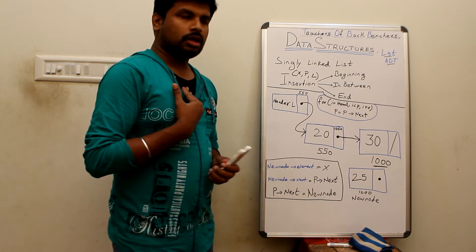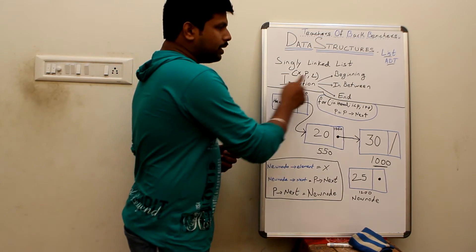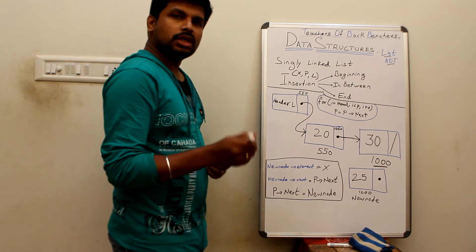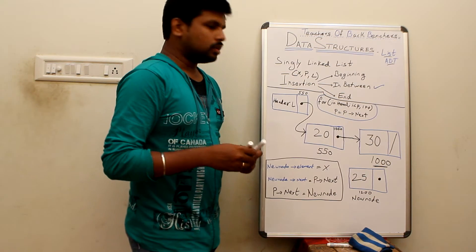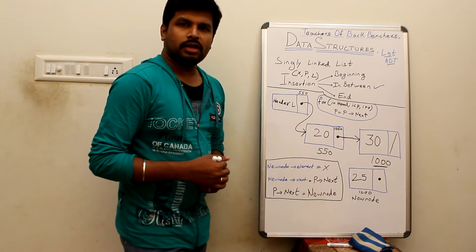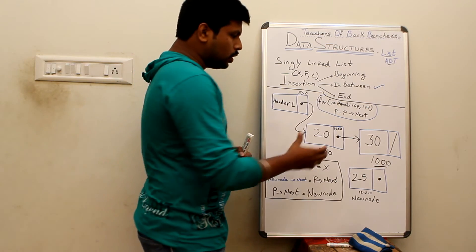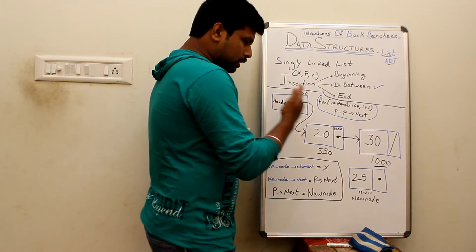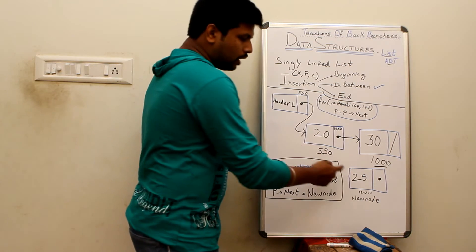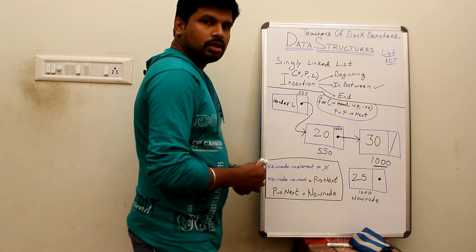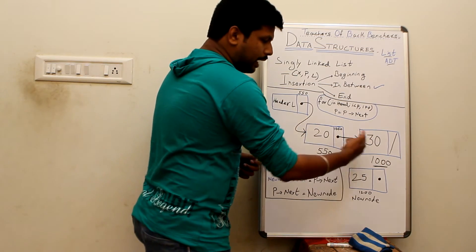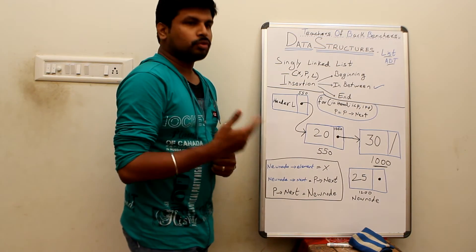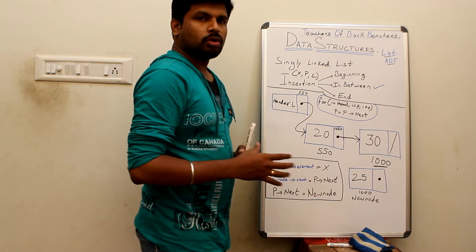After creating the node, we decide where to insert it. Insertion can be done at the beginning, in between, or at the end. In this video we are going to insert a new node in between. Let's say the new node has value 25 and we are going to insert it at position 2, placing it between 20 and 30, so the list will have values 20, 25, and 30.